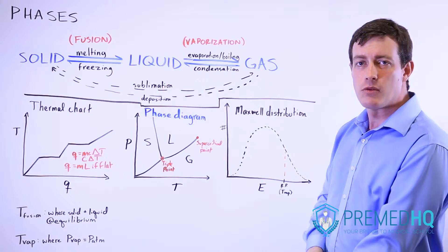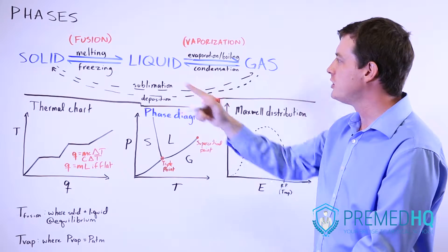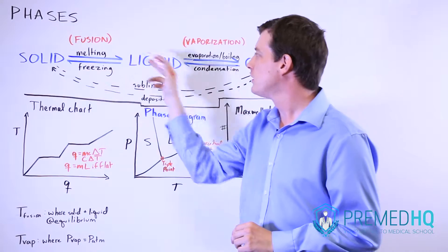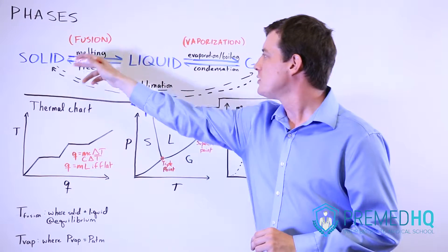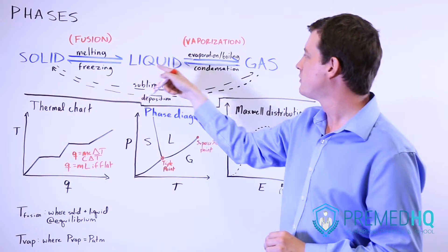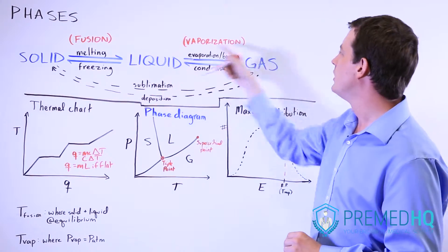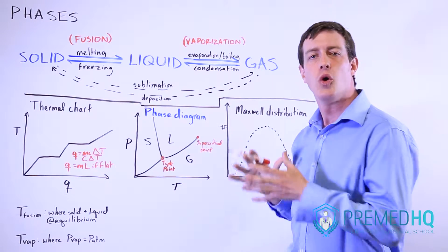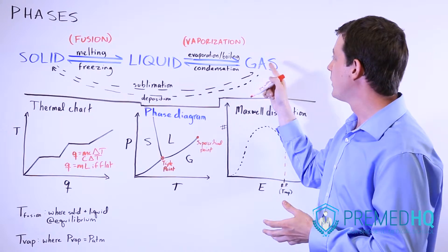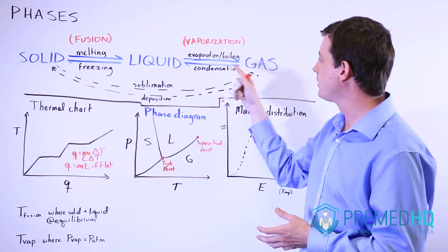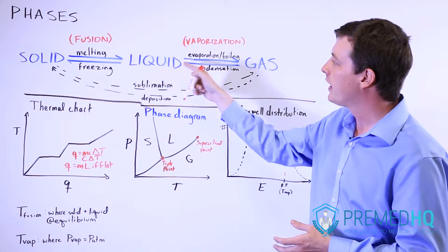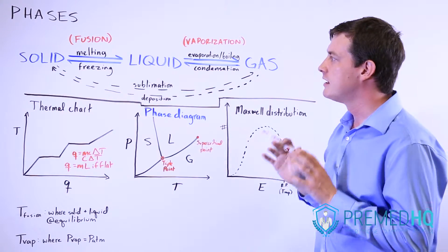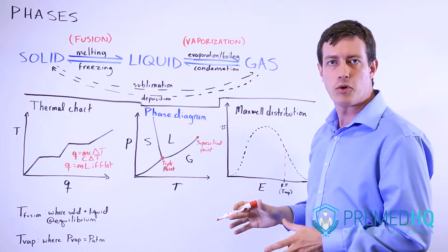There are a lot of words you can use to describe changes between phases. To go from a solid to a liquid is usually described as melting, and to go from a liquid to a gas is described as either evaporation or boiling. Going the other way, from gas to liquid is condensation, and from liquid to solid is described as the freezing point.